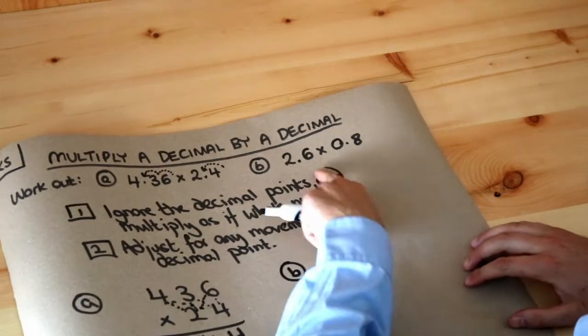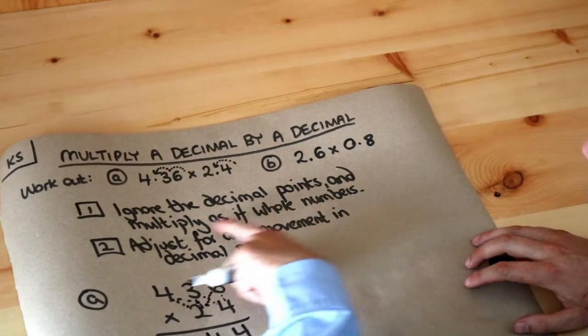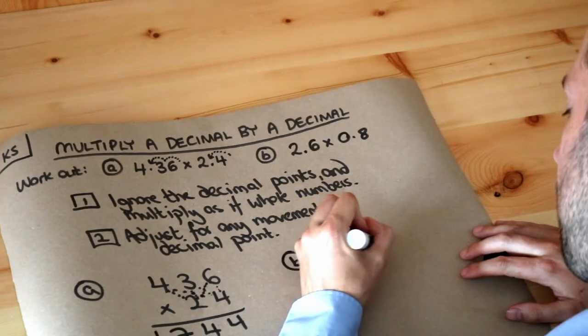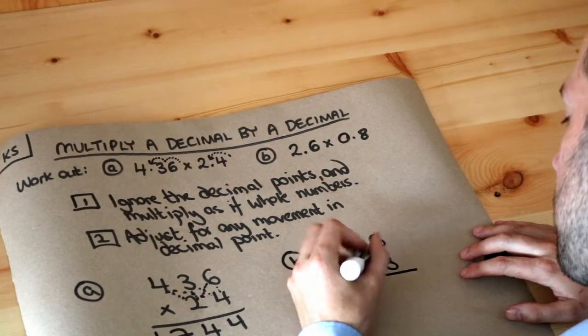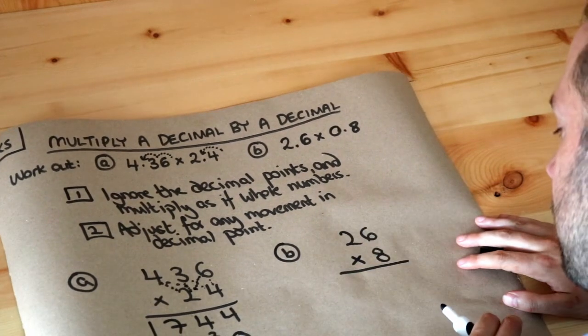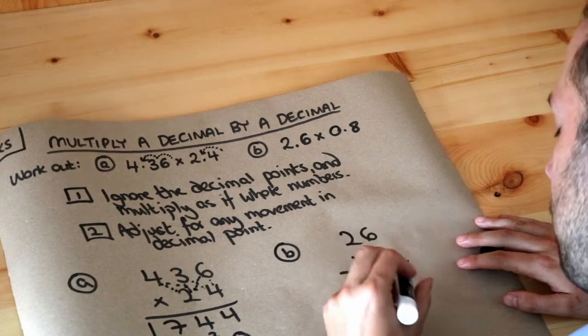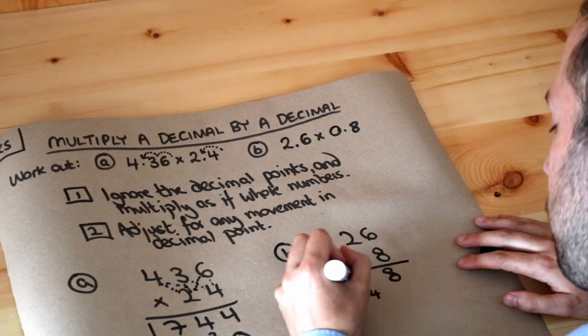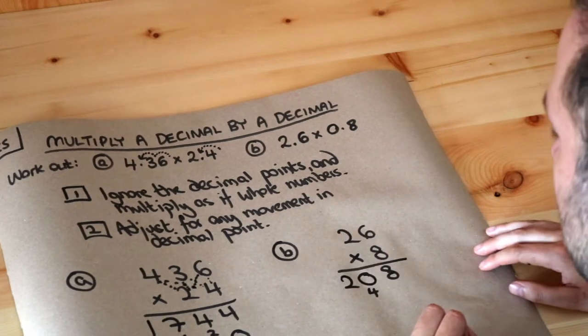Let's do it for the second one. We first ignore the decimal point and multiply as if whole numbers, so we do 26 times 8. So 6 times 8 is 48, put the 8, carry the 4. 2 times 8 is 16 plus the carried 4 is 20, so we get 208.